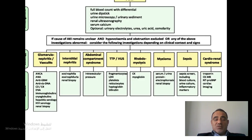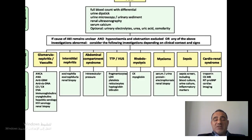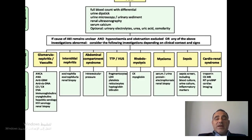If the cause of acute kidney injury is identified based on history, physical examination, and these baseline parameters, no further workup is needed. If the cause remains unclear and hypovolemia and obstruction have been excluded, or if any baseline investigation is abnormal, further investigations are considered based on clinical context. If we suspect glomerular diseases such as glomerulonephritis or vasculitis, we screen for autoimmune diseases: ANCA, ANA, anti-double-stranded DNA, anti-GBM antibody, complement levels, immunoglobulins for cryoglobulinemia, and for multiple myeloma.